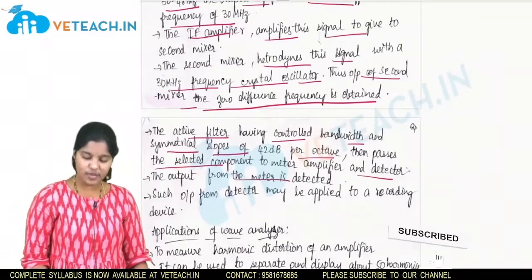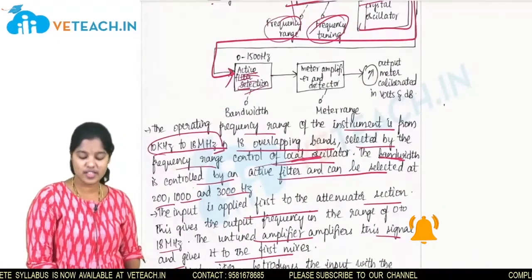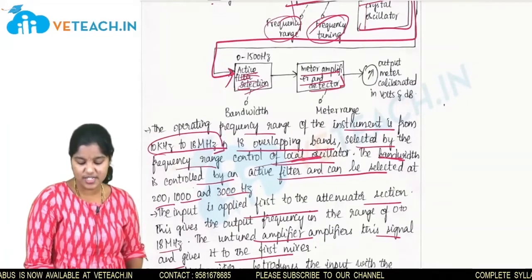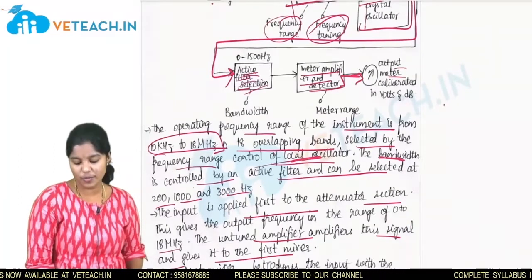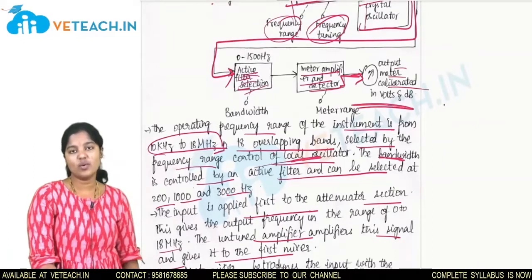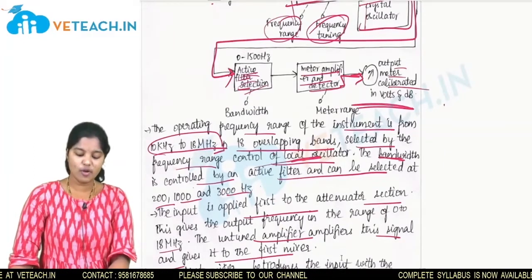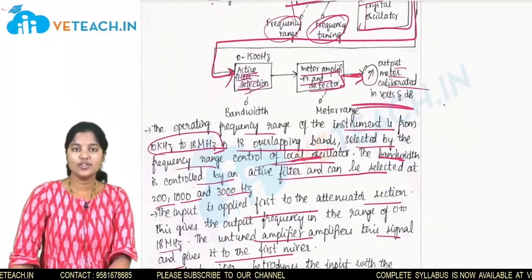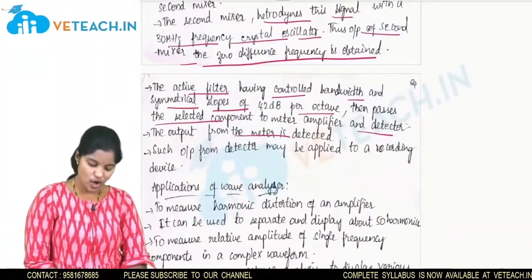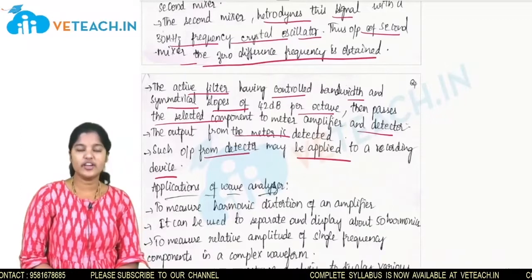The output of the meter is detected and passes to the active amplifier section, then the meter amplifier and detector section. The output meter is calibrated in volts and dB. The output from the detector may also be applied to a recording device.